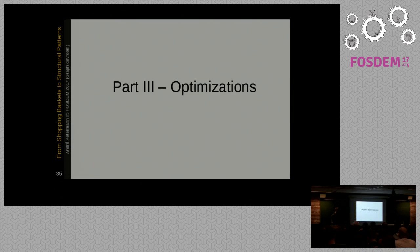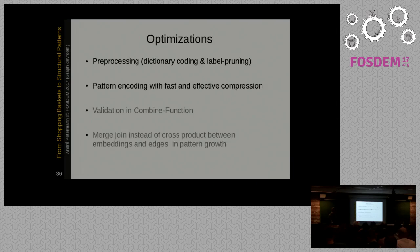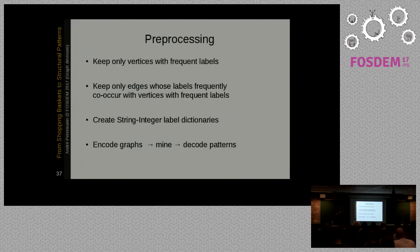This was the basic idea how we did the data flow system like Apache Flink. And now we did some optimizations to this problem. So actually there are four of them. And because two of them are very difficult to explain without becoming too scientific, we just skip them. One is it's even more efficient to do the validation step in the combined function because it matters to have fewer tuples before you... Network traffic, of course, for everyone's programming with distributed data flow systems, it seems obvious. And we use a merge join instead of a cross during the pattern growth process. But this needs a lot of explanation now. But what we also do, we do a pre-processing where we use dictionary and dictionary encoding and label pruning to reduce the input size. And the most efficient thing is we do a pattern encoding with a fast and effective compression technique.